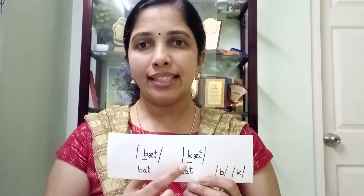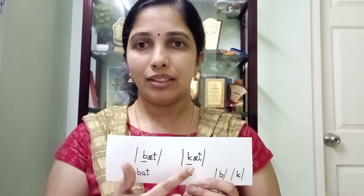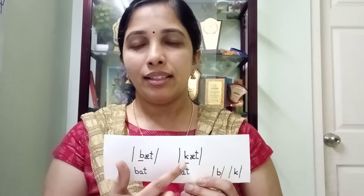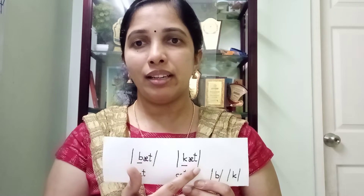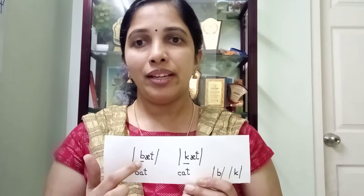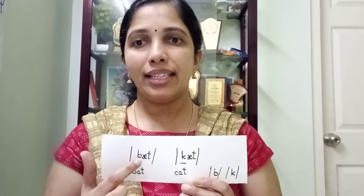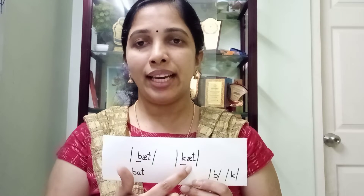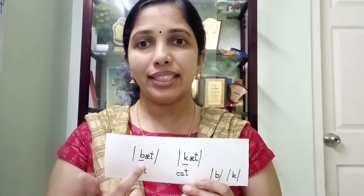I will show you an example. The two words bat and cat are distinguished and differentiated by the initial phoneme of these two words — /b/ and /k/. Bat and cat are different words; in the initial position, the phonemes are /b/ and /k/. When /b/ is substituted by /k/ in the word bat, it becomes cat. With this substitution, a different word with a different meaning is formed.